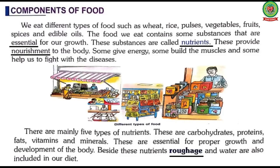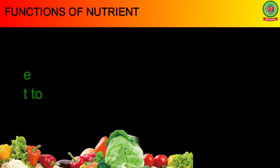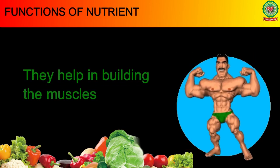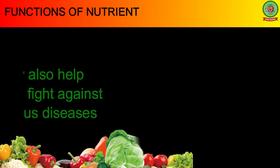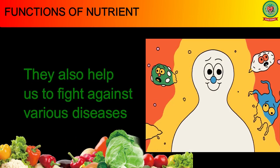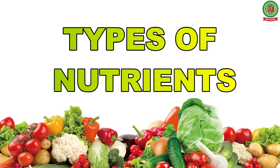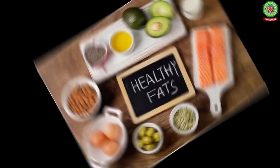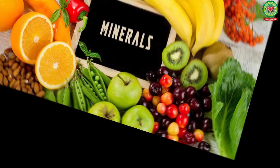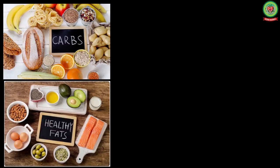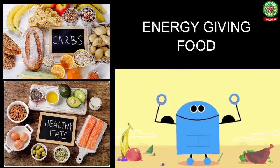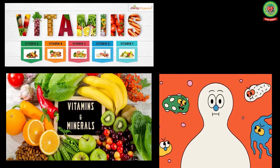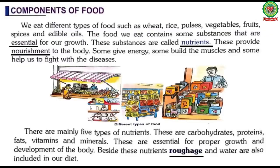Students, these nutrients play many functions: number one, they provide nourishment to our body; number two, they help in building the muscles; number three, they also help us to fight against various diseases. There are basically five types of nutrients: carbohydrates, proteins, fats, vitamins, and minerals. Carbohydrates and fats are energy-giving foods, proteins are body-building food, and vitamins and minerals are protective food.